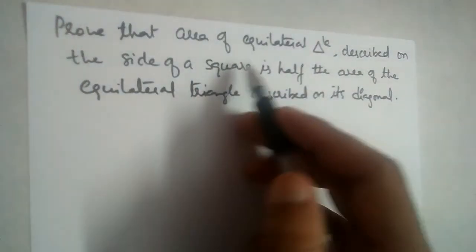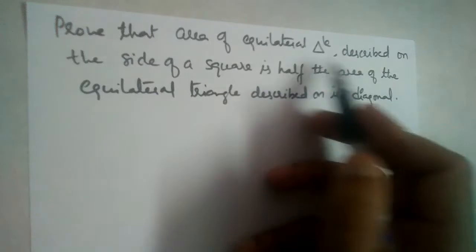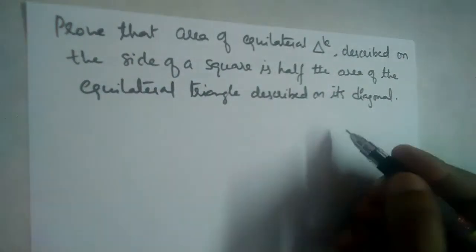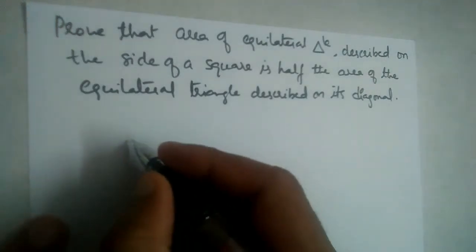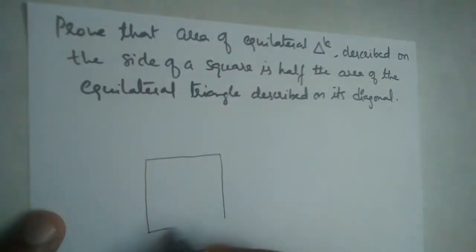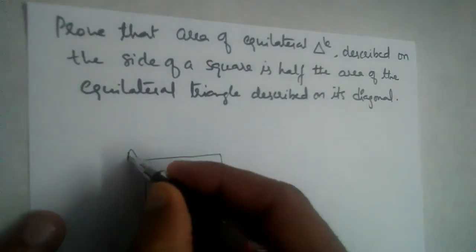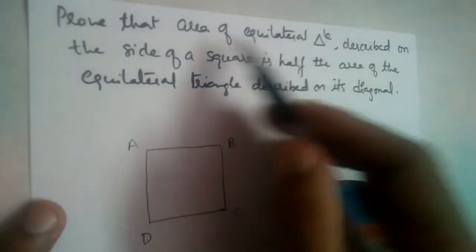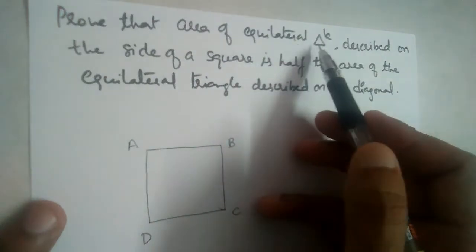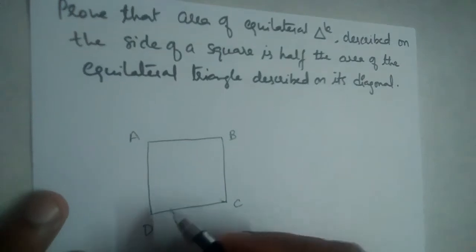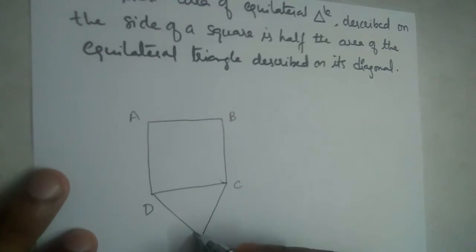Prove that the area of an equilateral triangle described on the side of a square is half the area of the equilateral triangle described on its diagonal. We have a square — let us draw a square and name it A, B, C, and D. We are given the area of an equilateral triangle drawn on the side of the square, so let us draw an equilateral triangle on DC.